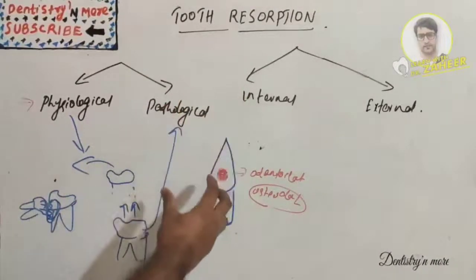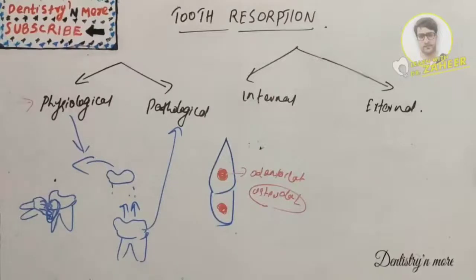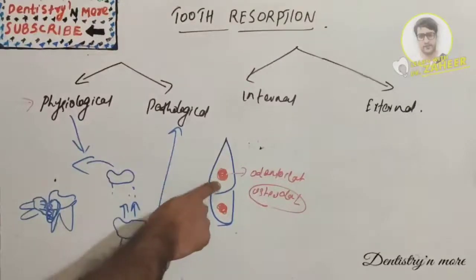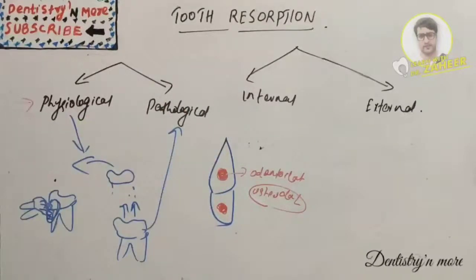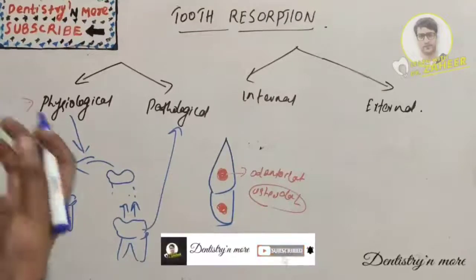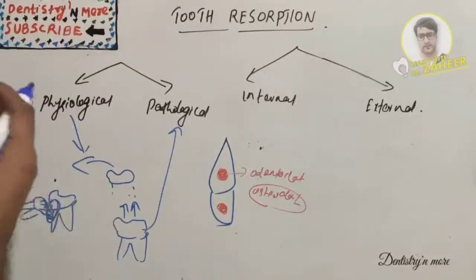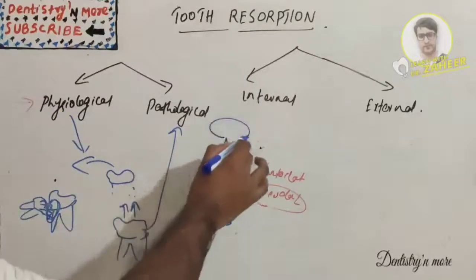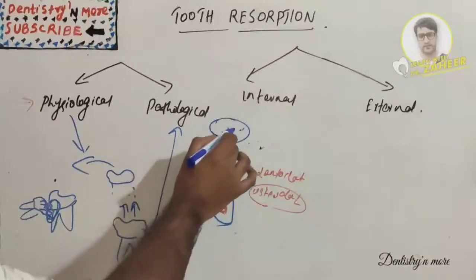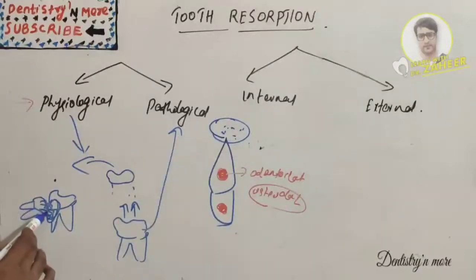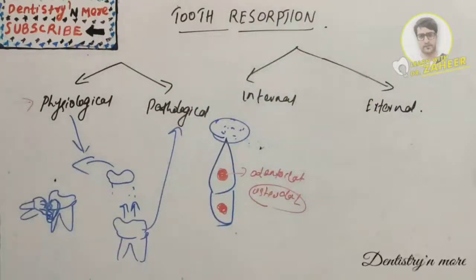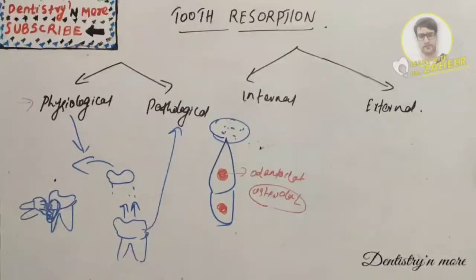Another classification is internal resorption and external resorption. Internal resorption happens within the tooth, while external resorption comes from outside. Internal resorption starts mainly with a pulp problem. External resorption takes place on the surface of the root near the apex, mainly due to periapical issues or impacted teeth pressing from outside.